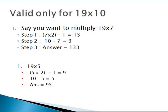Hello friends, now the 19 table trick is valid only when you multiply 19 from 1 to 10. For 11, 12, or numbers after 10, this trick is not valid. Now say you want to multiply 19 into 7.